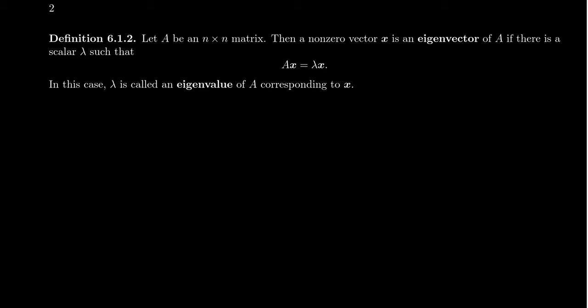We call this an eigenvector of A if there exists some scalar. And by tradition, the scalar we use for eigenvalues is typically the Greek letter lambda. And so we have the property that multiplying the vector by the matrix A is the same thing as multiplying the vector by a scalar lambda in this situation.